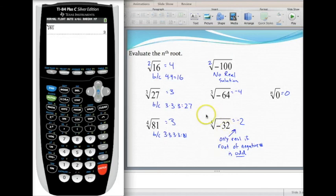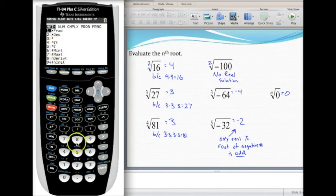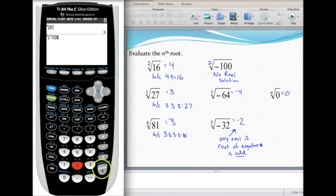So if we wanted to try this one, the fifth root of negative 32, hit 5 first to get the fifth root. Underneath the math menu, select option 5, that's the any root option, and then type in negative 32. And you'll see that the answer is negative 2.